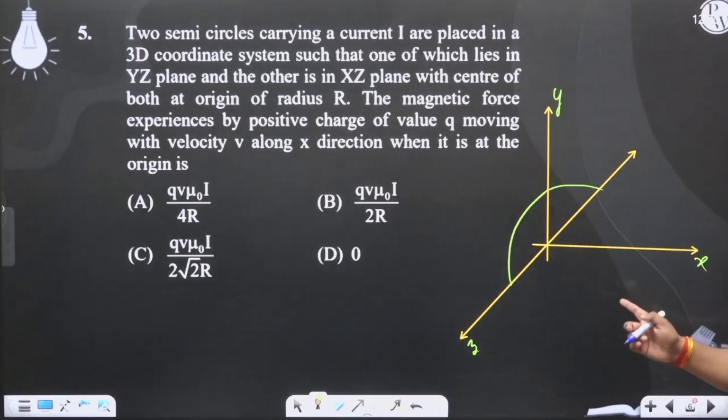One of which lies in the YZ plane, let's say the center here. The wire is in this plane. Then we are going for the XZ plane. X axis, Z axis, center will be here at the origin.